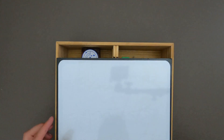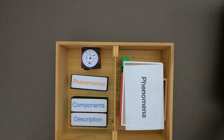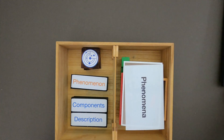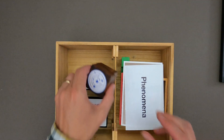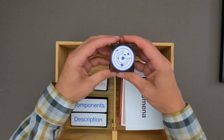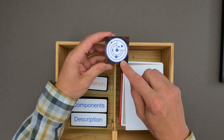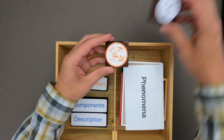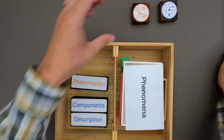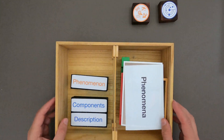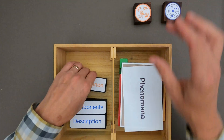You can see since there is a whiteboard in the box that we're going to be doing some drawing. Creating models is one of the big things that scientists do. Models are simply representations of natural phenomena. We develop a model and then we can test and see if our model is right.